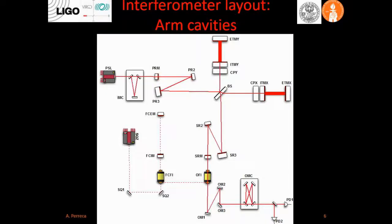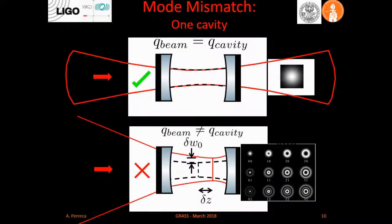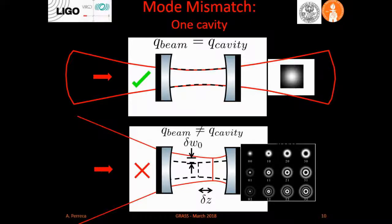So we have the arm cavities, power recycling cavity, signal recycling cavity, and output mode cleaner. The problematic of mode matching, if we consider just one single cavity, in simplified terms, is that we aim to introduce a beam — which can be described as a Gaussian beam — into the cavity that matches exactly the eigenmode of the cavity. A Gaussian beam in general can be expressed by the complex Q factor, and we want the Q of the beam to match exactly the Q of the cavity.